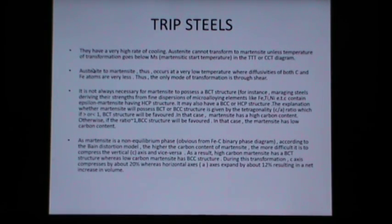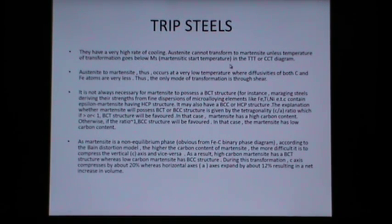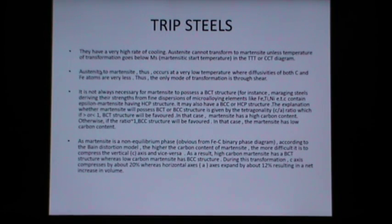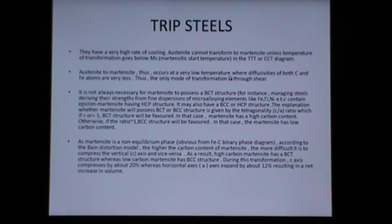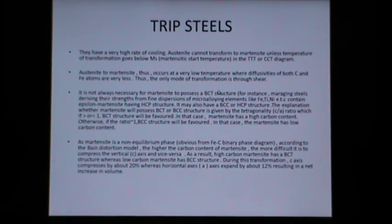In TRIP steels, martensite is obtained from austenite following a very high rate of cooling, also termed quenching. Austenite cannot transform to martensite unless the transformation temperature goes below the martensitic start temperature (Ms) at a given composition in the TTT or CCT diagram. This transformation occurs at very low temperatures where diffusivities of both carbon and iron are very low, so the only mode of transformation is through shear.